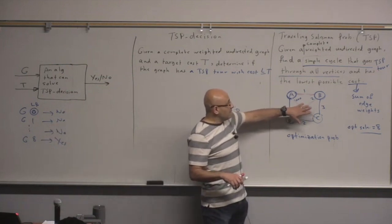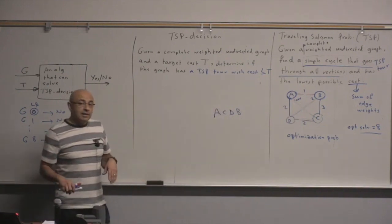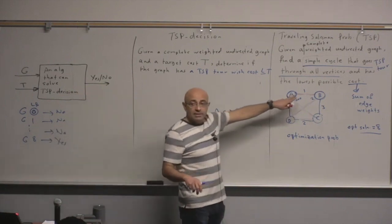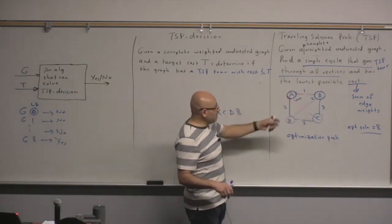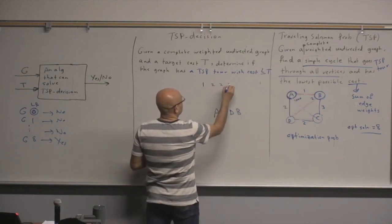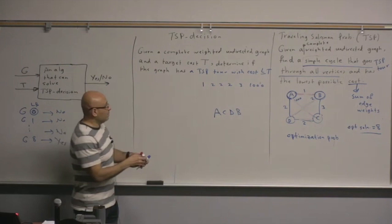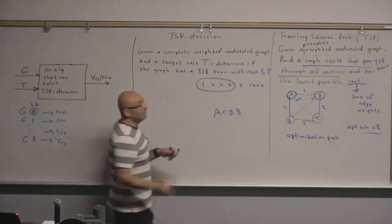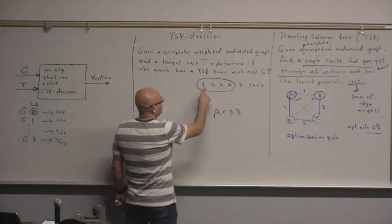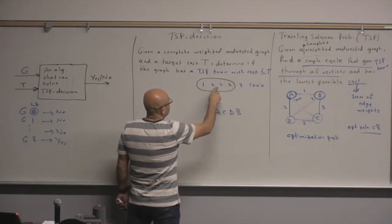Look at all the edges and take the minimum V edges. We have six edges — sort them: 1, 2, 2, 2, 3, 1000. We pick the first four, giving a lower bound of 1+2+2+2 = 7. This is a very good lower bound here, and there are even better ways of computing lower bounds for the Traveling Salesman Problem.